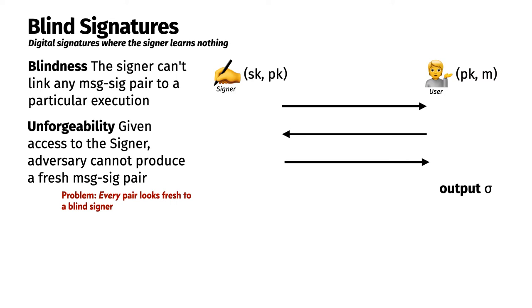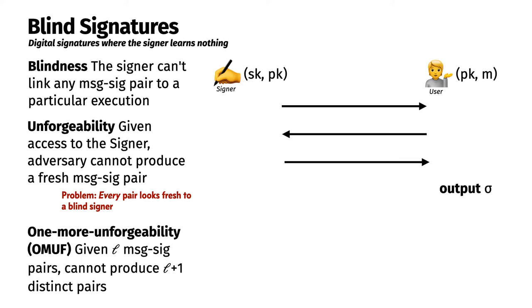The standard version of unforgeability for blind signatures is a slightly different notion called one-more unforgeability or omuf. This game just counts message-signature pairs. A blind signature scheme is one-more unforgeable if an adversary who makes L many calls to a signing oracle is unable to produce L plus one distinct message-signature pairs.